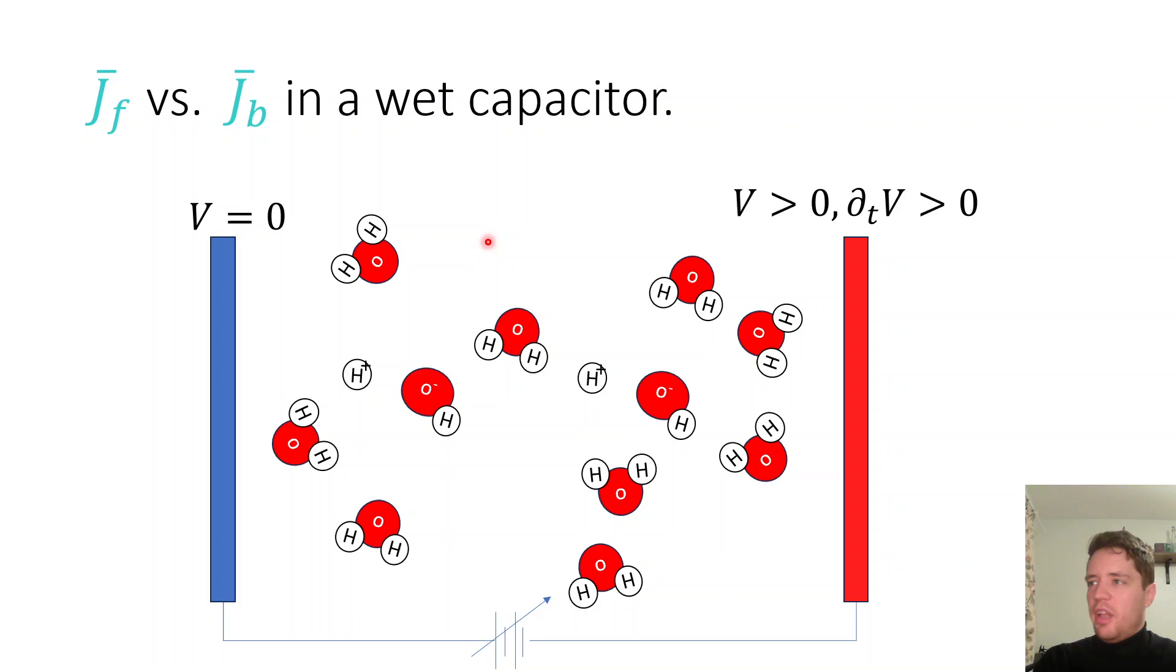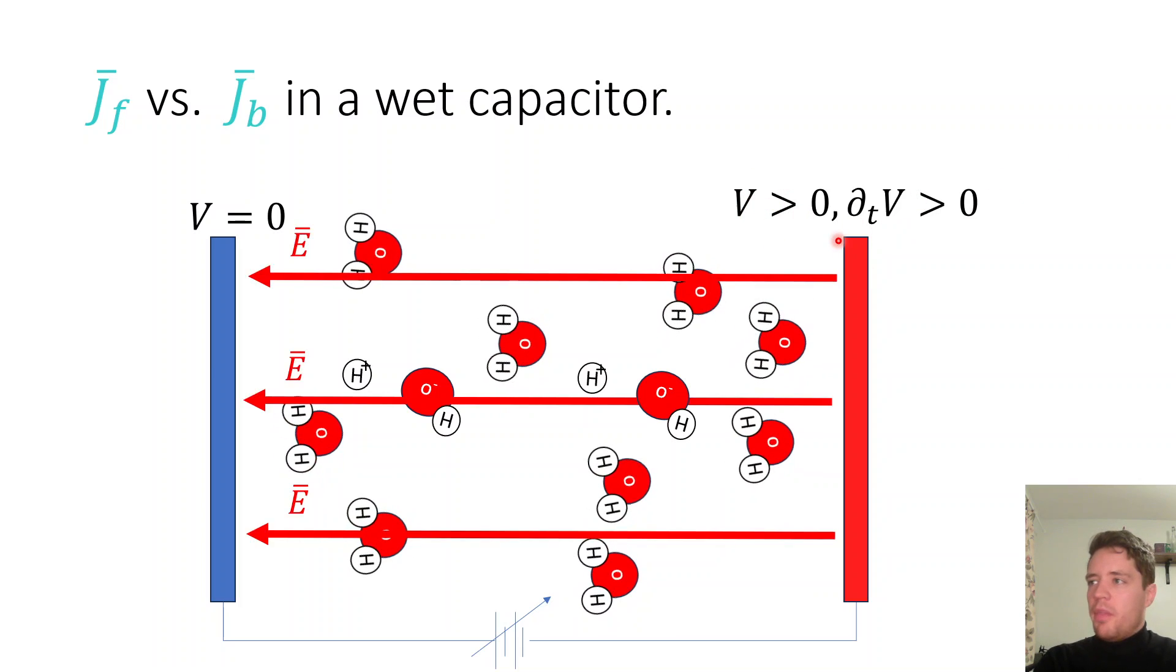So now, let's imagine that we place a voltage across these two plates in such a way that we keep this potential here at zero, but we increase the potential over here to a positive value, which increases over time, so we're sort of ramping up the potential as we go. So, that must mean that we create an E-field that is also increasing over time, and as soon as the E-field gets applied, all of the polarized water molecules will align with that field, with all the positive areas pointing towards the left, and the negative ones pointing towards the right.